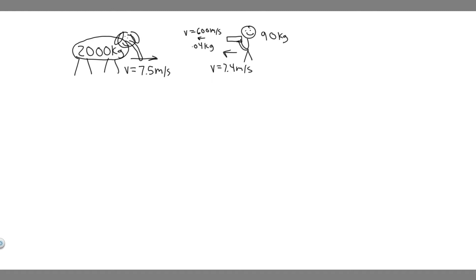Basically, in all of these problems we're solving for momentum. You need to know that momentum, denoted by P, is equal to the mass of an object multiplied by its velocity. This is the formula we're going to be using, and I think it's easiest just by seeing how it's done.